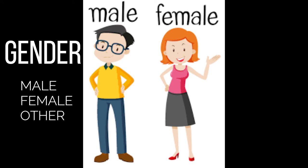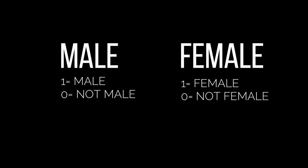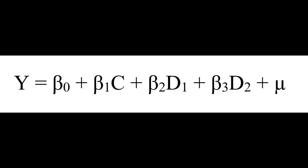Since our categorical variable gender has three values, we take two dummy variables: male and female. So we use the regression equation Y = β₀ + β₁C + β₂D₁ + β₃D₂ + μ.